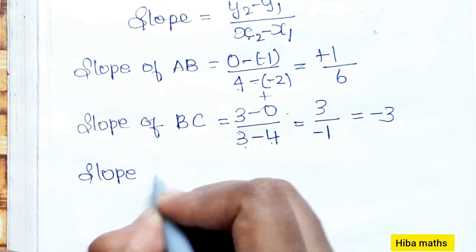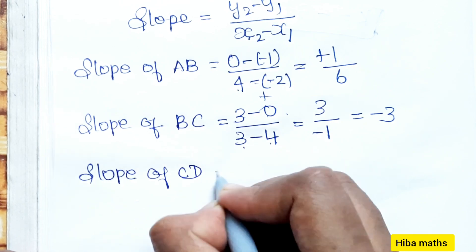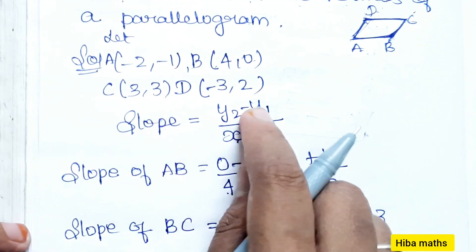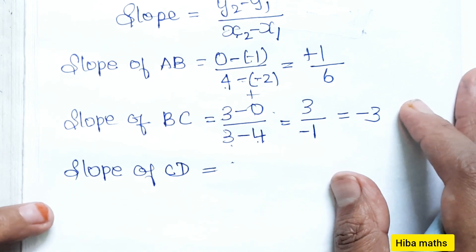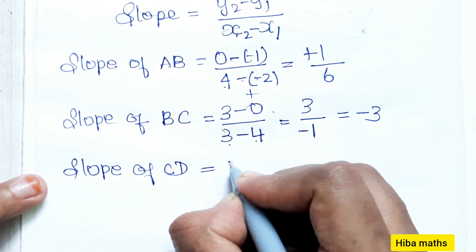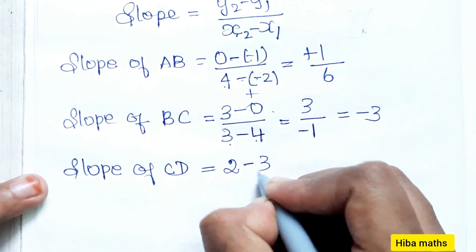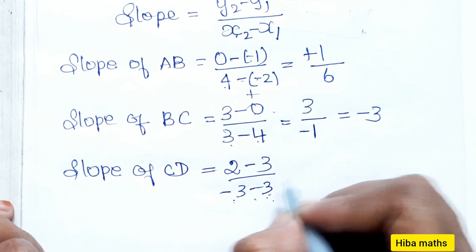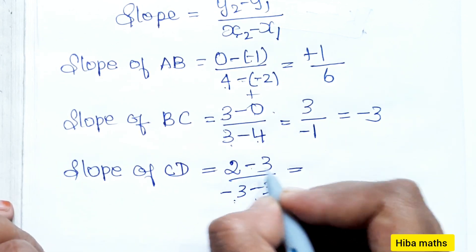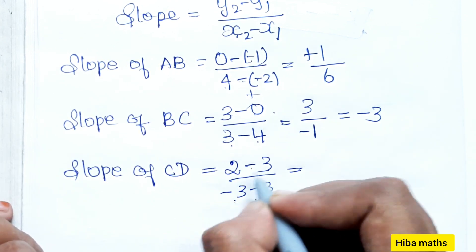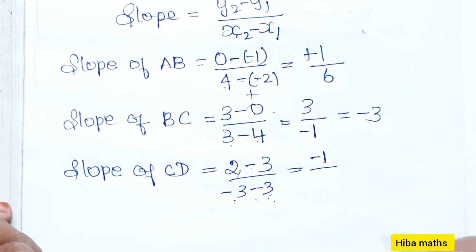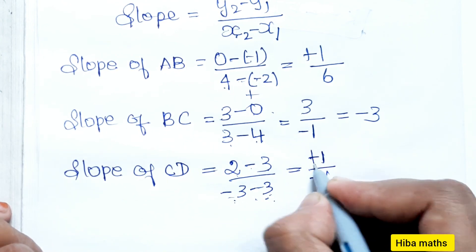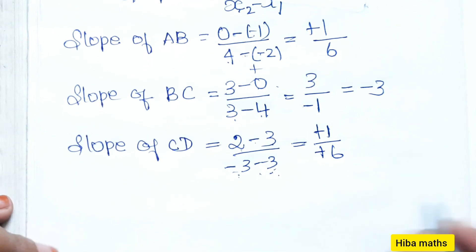Now, slope of CD: y2 = 2, y1 = 3, x2 = -3, x1 = 3. So slope of CD = (2 - 3) / (-3 - 3) = -1 / -6 = 1/6.